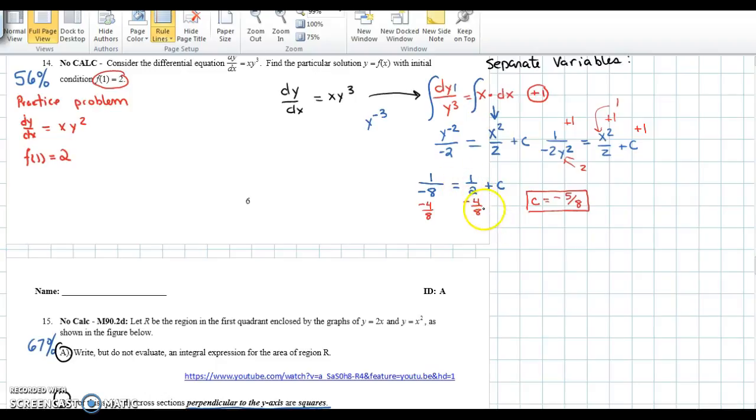Subtracting 1 half from both sides is like subtracting 4 eighths. And when you do, you get a constant of negative 5 eighths. Now we're 5 sixths of the way through the rubric. The last part is pretty tricky, so watch carefully.